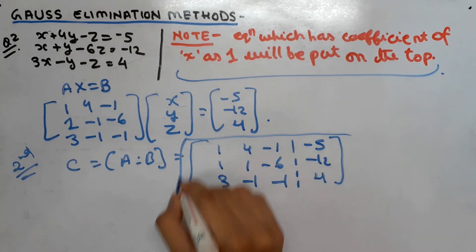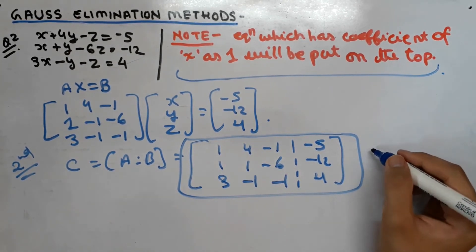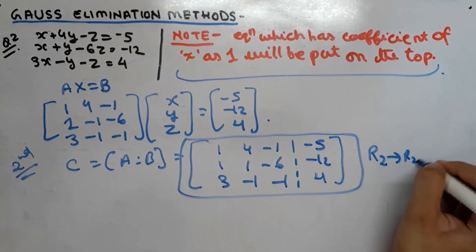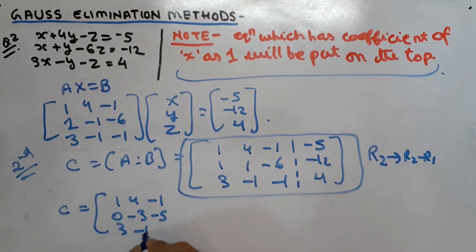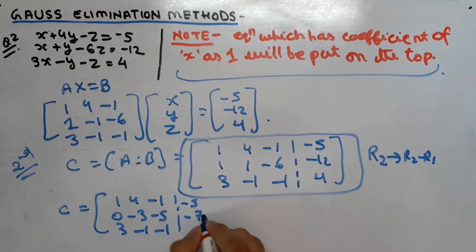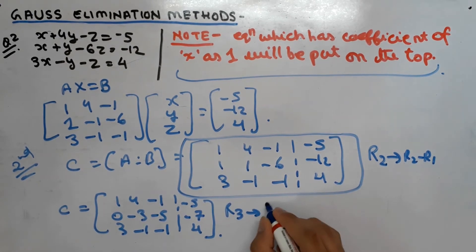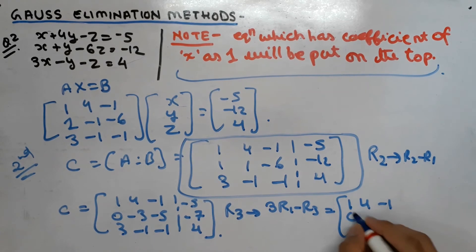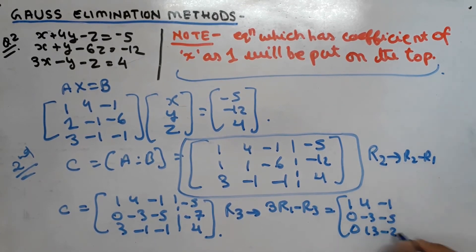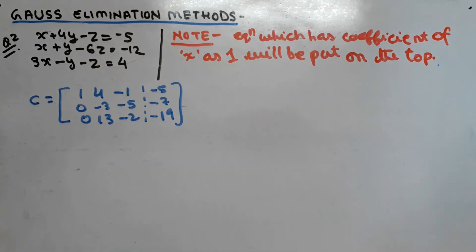Now we convert this into echelon form using row transformations. First, R2 → R2 - R1, giving: row 1: 1, 4, -1; row 2: 0, -3, -5; row 3: 3, -1, -1, with B column: -5, -7, 4. Then R3 → 3R1 - R3, giving: row 1: 1, 4, -1; row 2: 0, -3, -5; row 3: 0, 13, -2, with B column: -5, -7, -90. A couple more row transformations are left as practice.